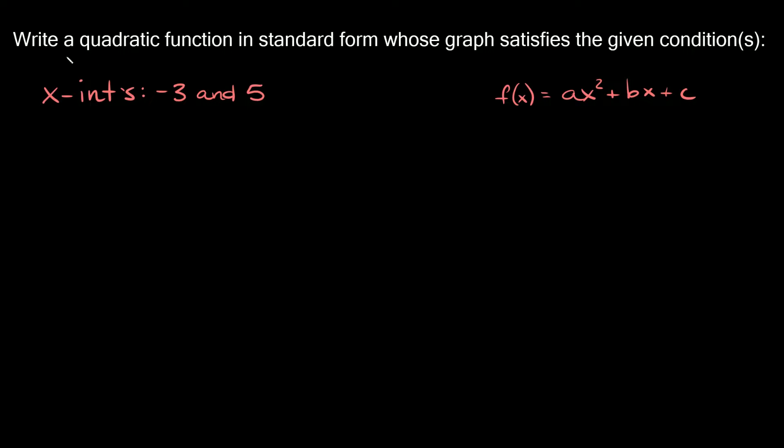So here it just says write a quadratic function in standard form whose graph satisfies the given conditions, and it gives us a couple x-intercepts right here, negative 3 and positive 5. And just to remind you, standard form is this function right here. So it's just f of x is equal to ax squared plus bx plus c. So we want our answer in this form right here.